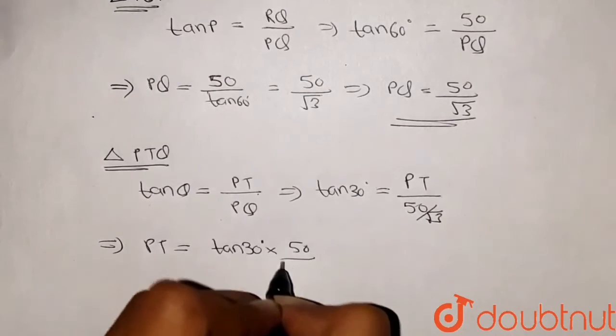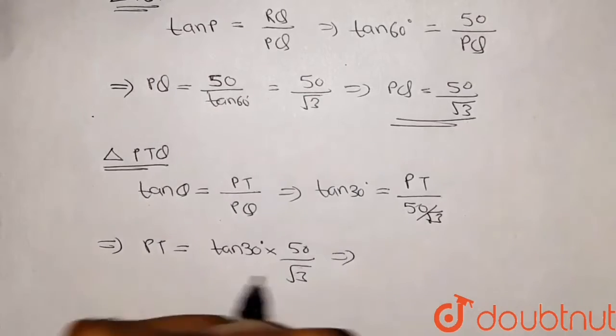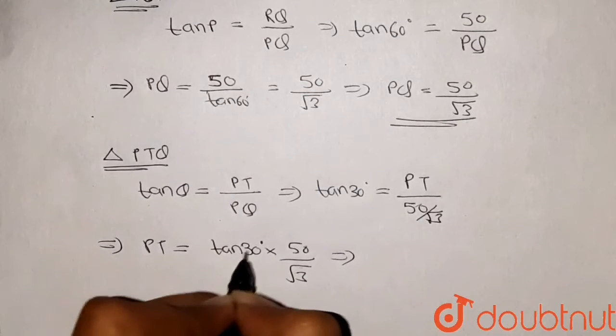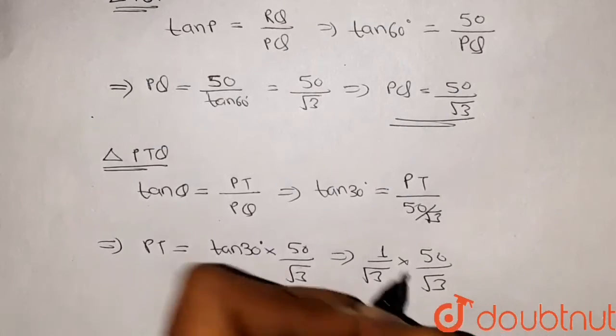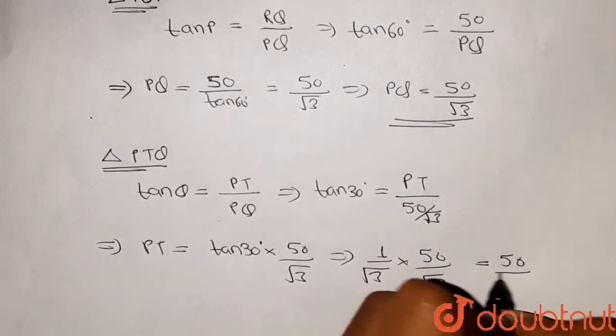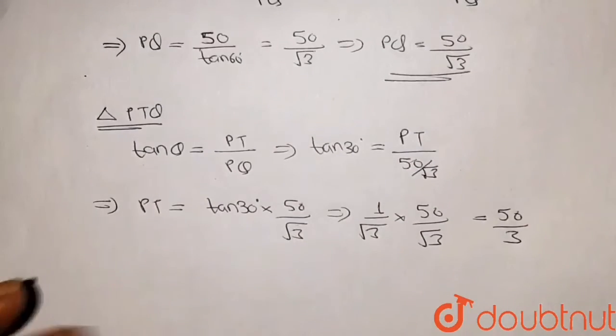multiplied by 50 divided by root 3. Now the value of tan of 30 degrees is 1 by root 3, multiplied by 50 divided by root 3, so this will become 50 divided by 3.